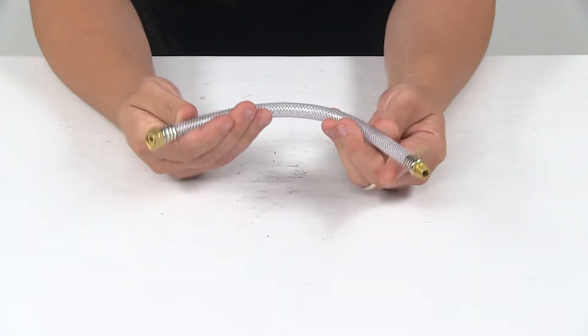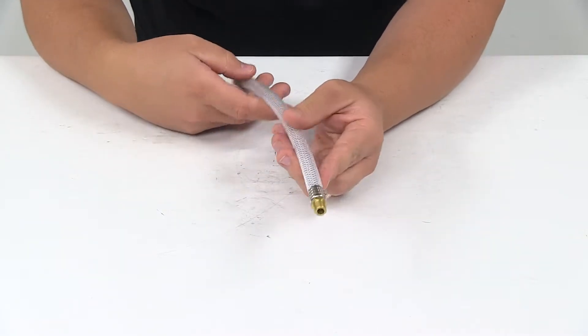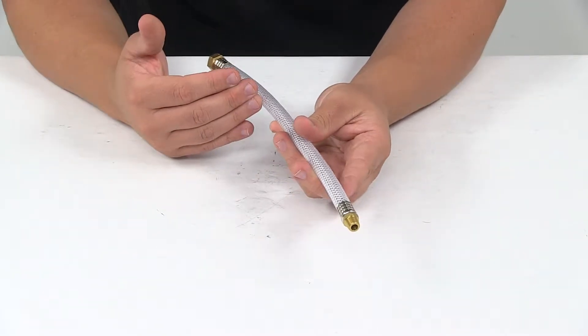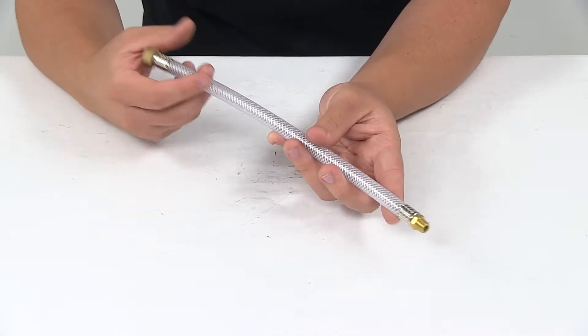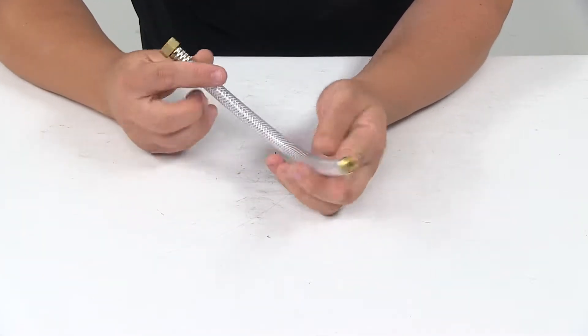Today we're taking a look at a replacement garden tub waterway hose. This waterway hose is designed to replace the waterway hose for your garden tub, typically found in RV applications.